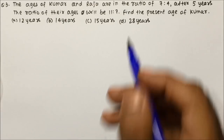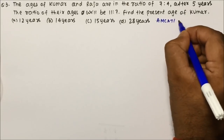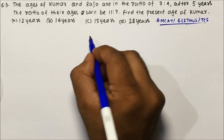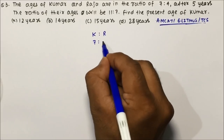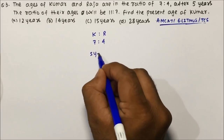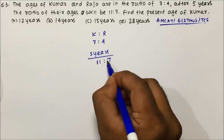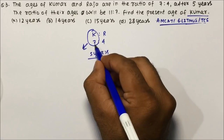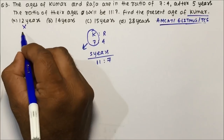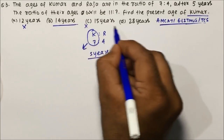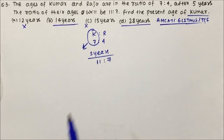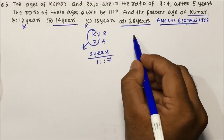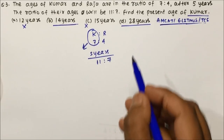Let's move to question number 3, a very important question typically asked in AMCAT, eLitmus, and TCS exams. The ages of Kumar and Raja are in the ratio of 7 is to 4. After 5 years, the ratio of their ages will become 11 is to 7. Find the present age of Kumar. Since Kumar's ratio value is 7, his age will be a factor of 7. Both options B and D are multiples of 7, so we need to determine which one is correct when there are more than one multiples of 7 among the options.